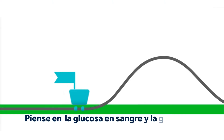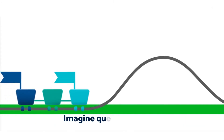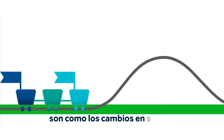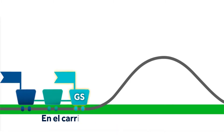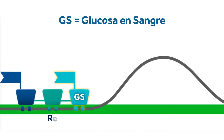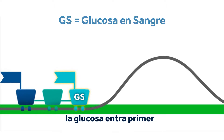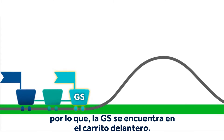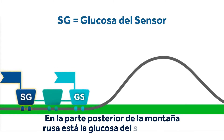Think of blood glucose and sensor glucose like the cars of a roller coaster. Imagine that the hills and bumps on the roller coaster are like the changes in your glucose levels throughout a typical day. In the front car of the roller coaster is blood glucose, or BG. When carbohydrate is digested, glucose first enters the bloodstream, so BG is in the front car. In the back of the roller coaster is the sensor glucose, or SG car.